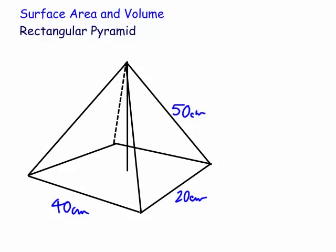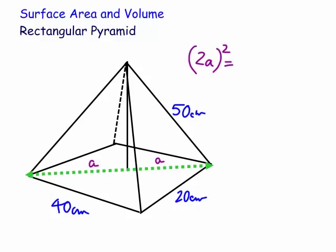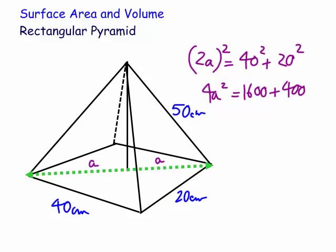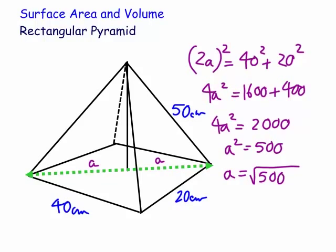The height is in the middle of this diagonal. Let's call this A and A — so both halves are A. We know that 2A all squared equals 40 squared plus 20 squared. So 4A squared equals 1600 plus 400, which gives us 4A squared equals 2000. Therefore A squared equals 500, and A equals the square root of 500.